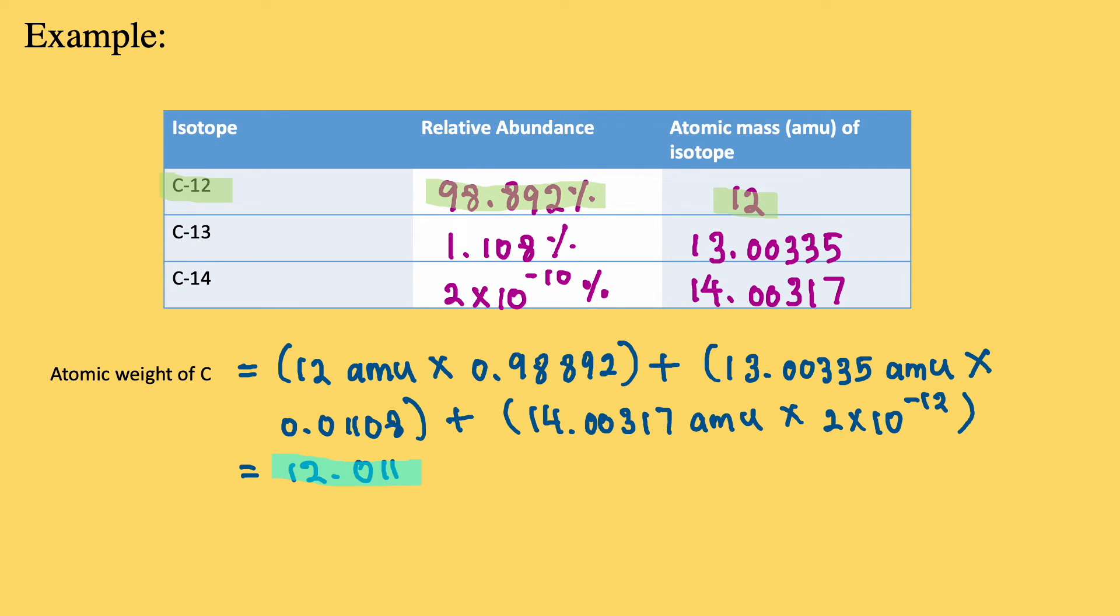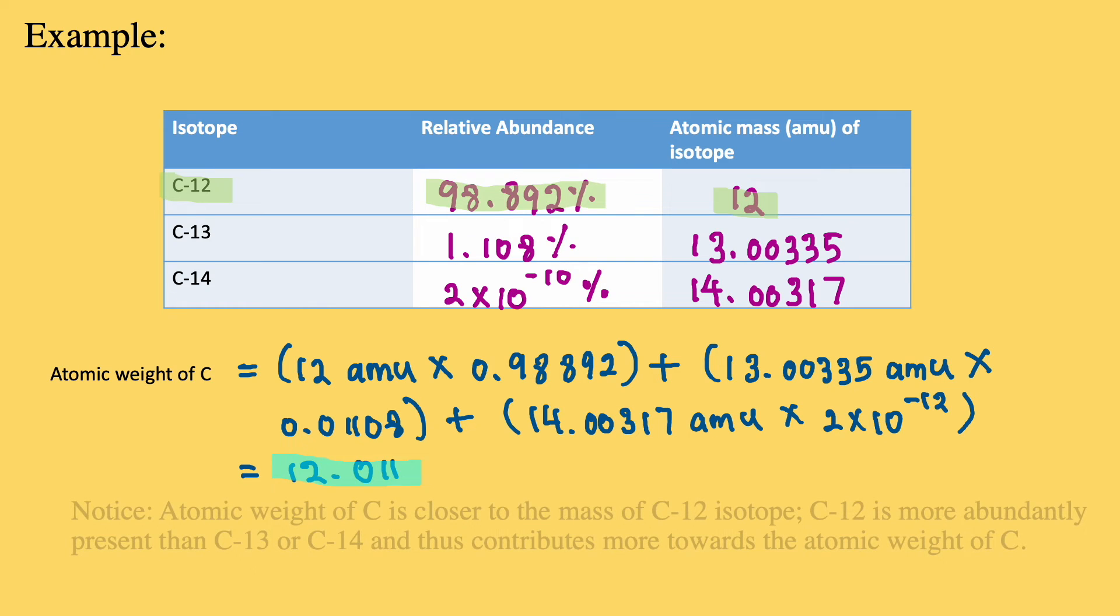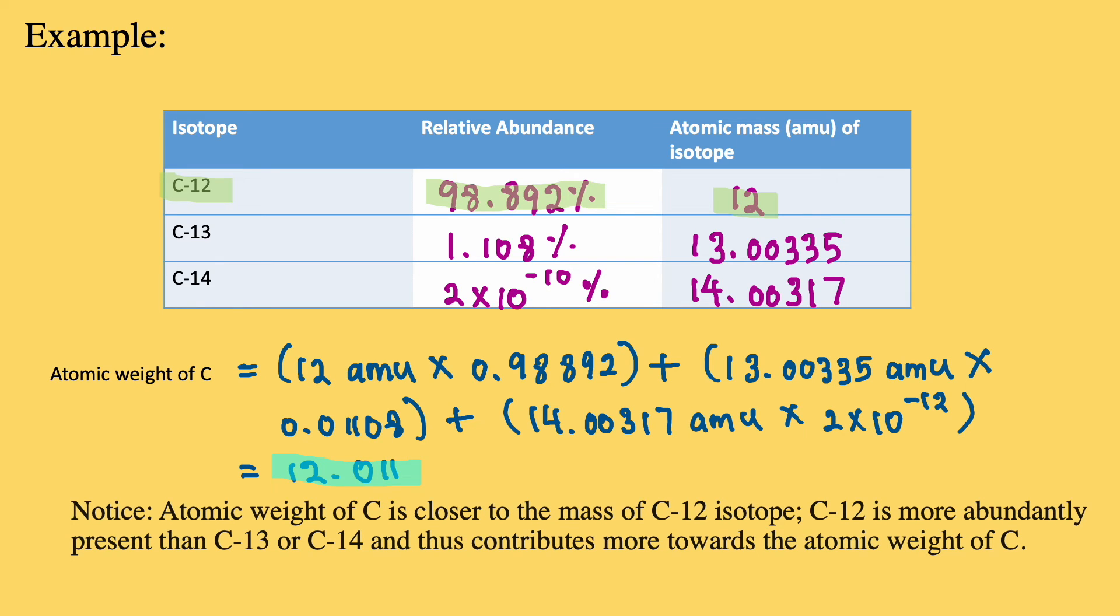Carbon-13's relative abundance is 1.108 percent and its atomic mass is 13.00335 atomic mass units. Carbon-14's relative abundance is 2 × 10^-10 percent and its atomic mass is 14.00317. Given these values,